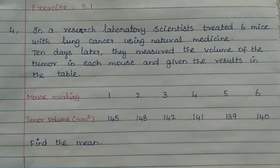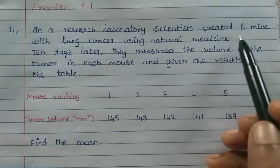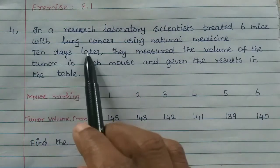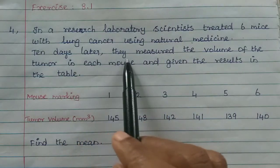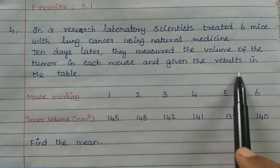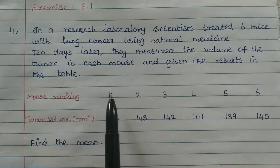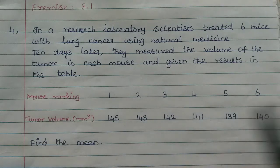Hi students, in this video we'll learn Exercise 8.1, problem 4. In a research laboratory, scientists treated 6 mice with lung cancer using natural medicine. 10 days later, they measured the volume of the tumor in each mouse and gave the results in the table. First mouse, the tumor volume is 145, second mouse 148, and third mouse 142, etc. for 6 mice.